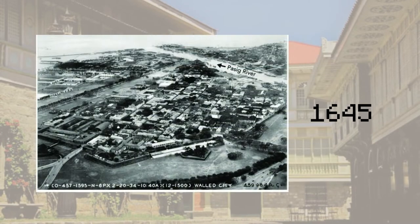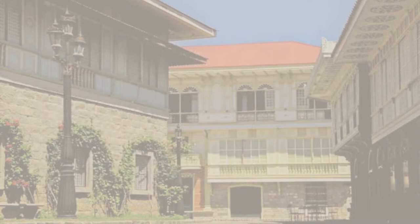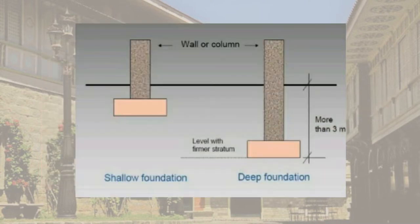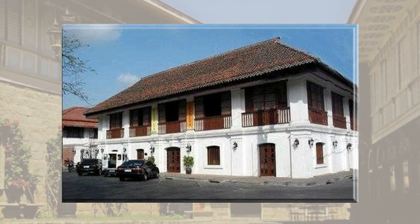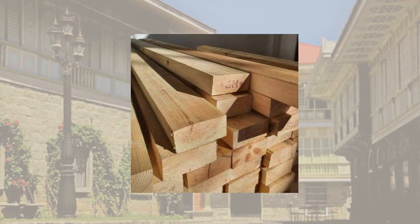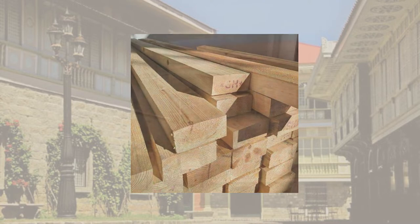In 1645, Intramuros had 600 houses. In the early Spanish colonial era, all of the houses are made of stone up to its columns. The early Bahay na Bato has a very deep foundation and smaller doors and windows so as not to weaken the structure. Hardwood timbers are used for beams, joists, and roof frames.